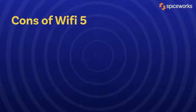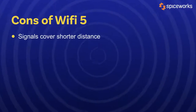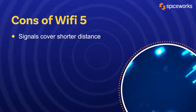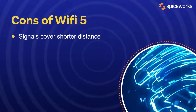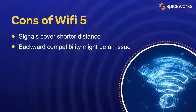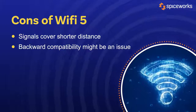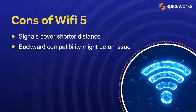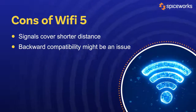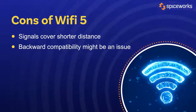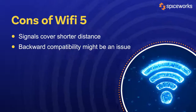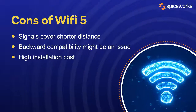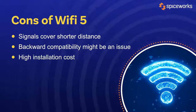Wi-Fi 5 also has the following cons. Wi-Fi 5 signals cover a shorter distance due to the 5 gigahertz band. Backward compatibility could be an issue with Wi-Fi 5, as devices operating with 2.4 gigahertz may not work well with the 5 gigahertz Wi-Fi 5. The initial cost of installing Wi-Fi 5 can be high.